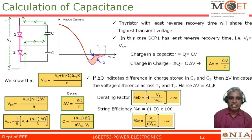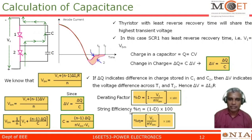The derating factor is given by: percentage D equals 1 minus string efficiency. String efficiency equals Vs divided by (N into VBM) into 100, where VBM is the maximum or highest transient voltage withstanding capability of the device. String efficiency is given by Vs divided by (N into VBM) into 100. So these two formulas — the C formula and the R formula derived in the previous video — are the important formulas for analytical problem sessions.